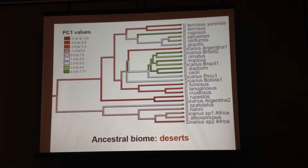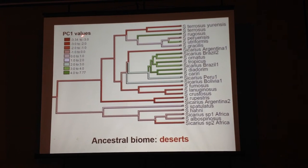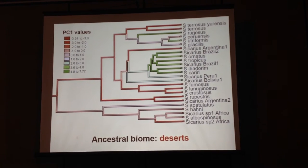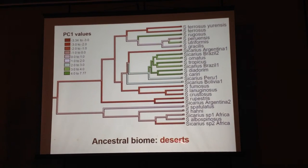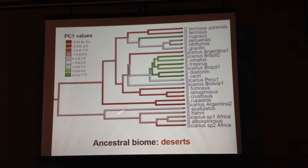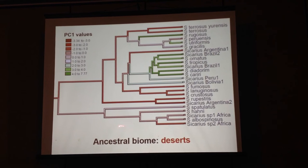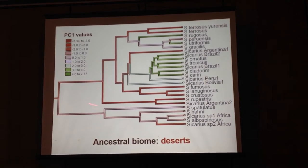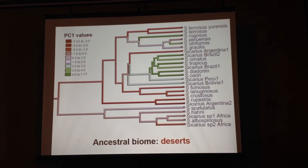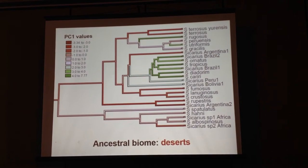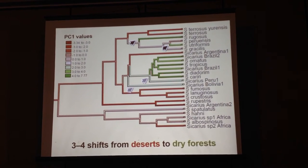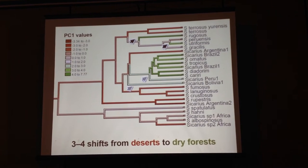If we take the main principal component one value for each species and plot it onto the phylogeny using a simple parsimony reconstruction of ancestral states, what we observe is that the ancestral biome for the genus is the desert, because all African species dwell in desert-like habitats, as does the first lineage to diverge in the neotropical region. From the deserts, Sicarius have colonized the dry forest at least three to four times, so it seems they have had many opportunities to shift between the two biomes.